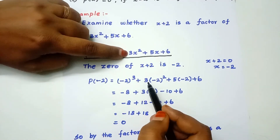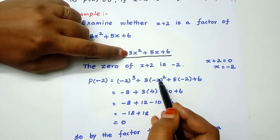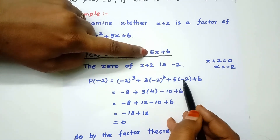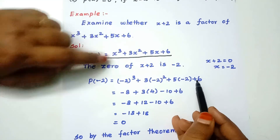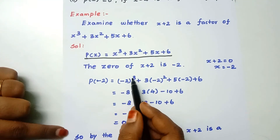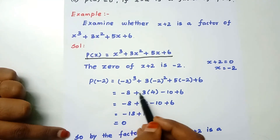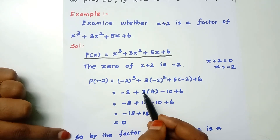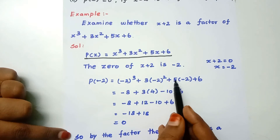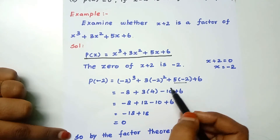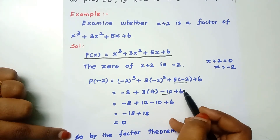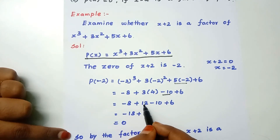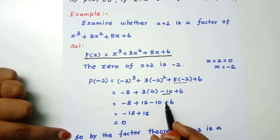P(−2) = (−2)³ + 3×(−2)² + 5×(−2) + 6. That gives minus 8, plus 3 times 4 which is 12, plus minus 10, plus 6. So: minus 8 plus 12 minus 10 plus 6.